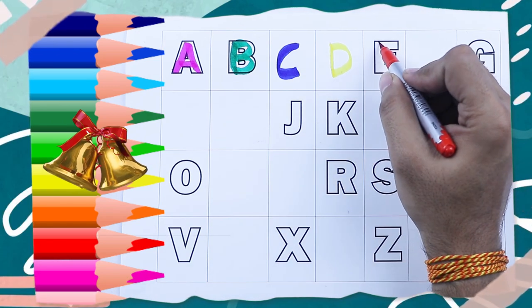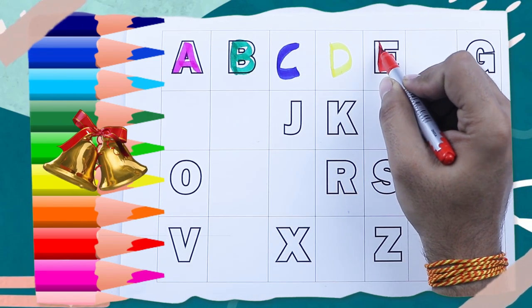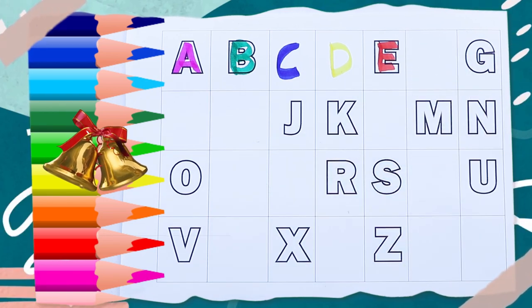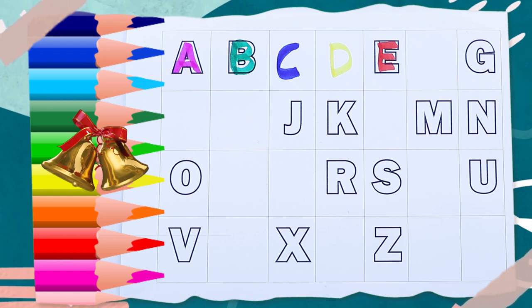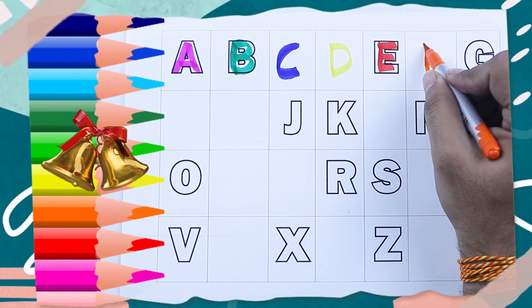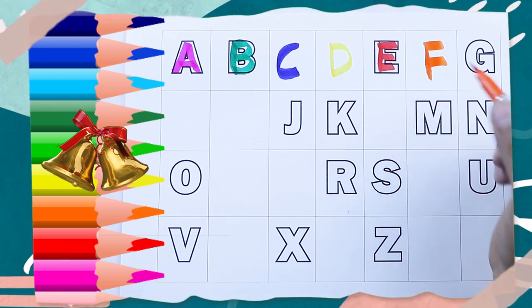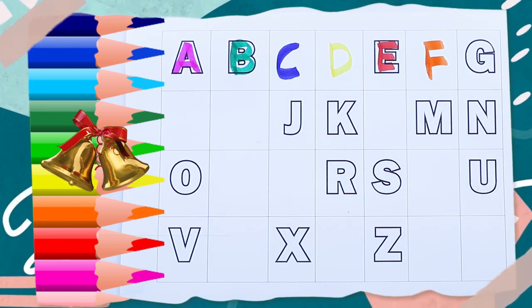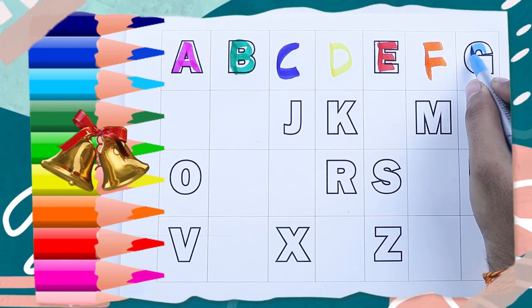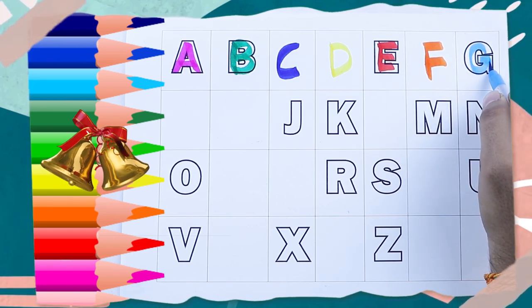Red color, E, E for elephant. What next? Tell me, yes, right. It's F, capital F, orange color. Capital F. Blue color, G, G for dog. What next?